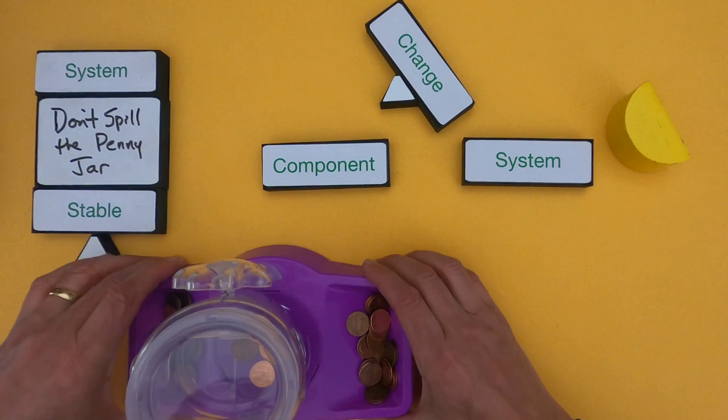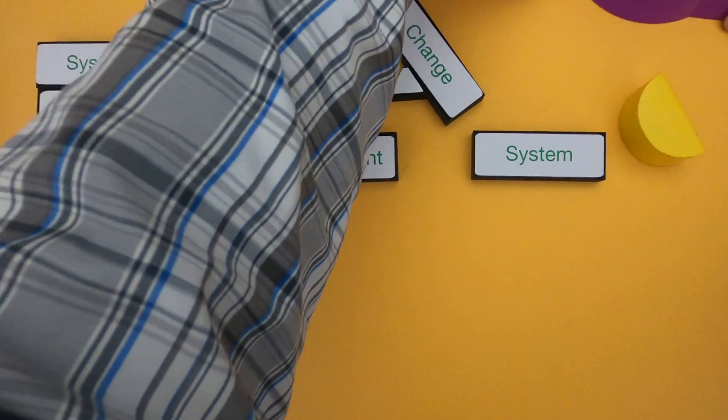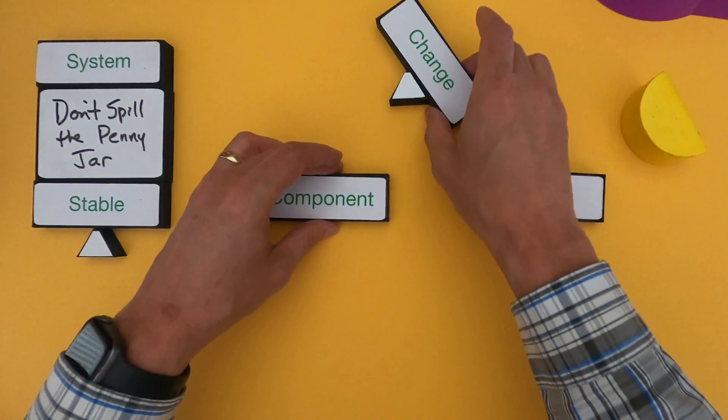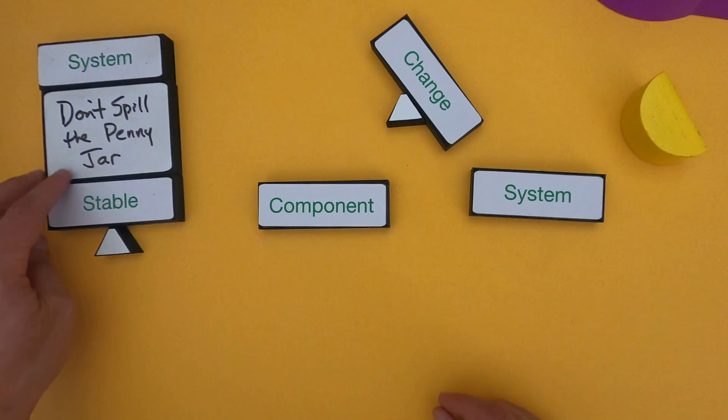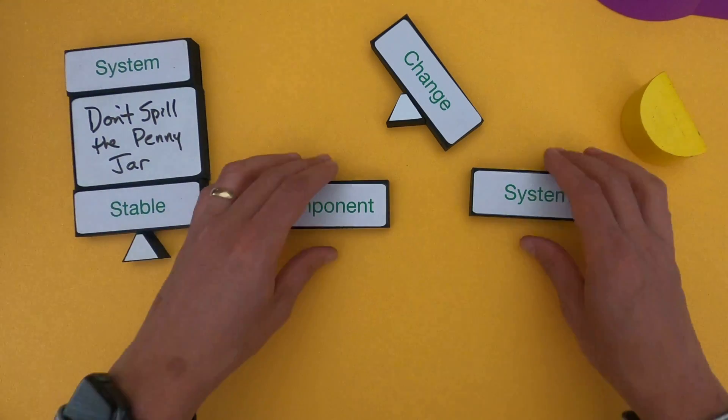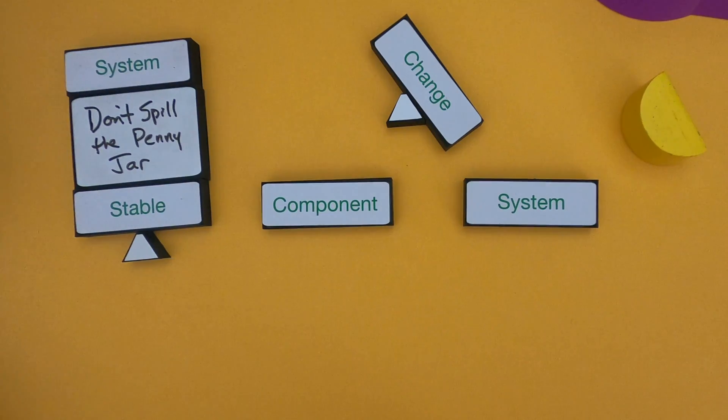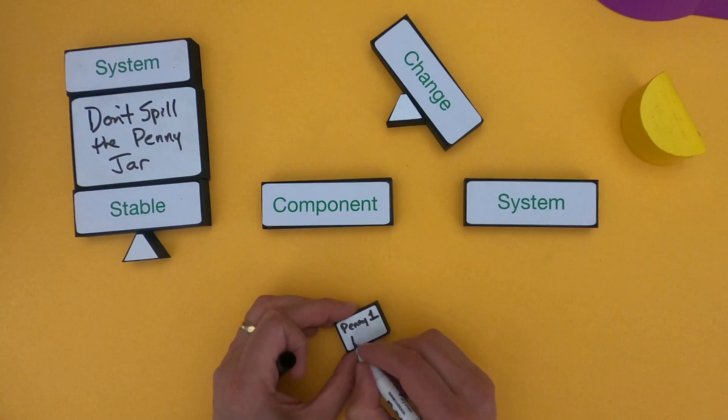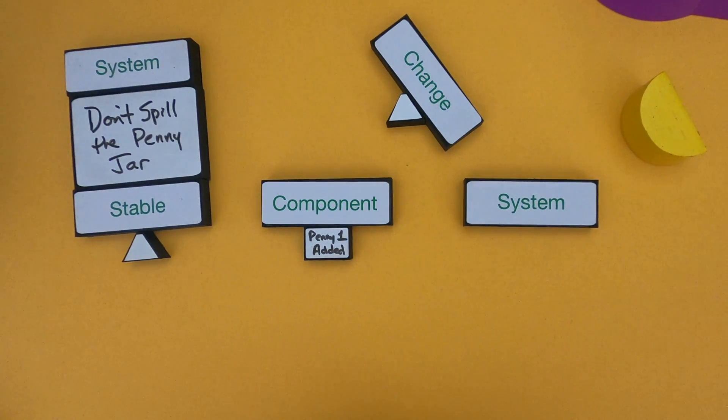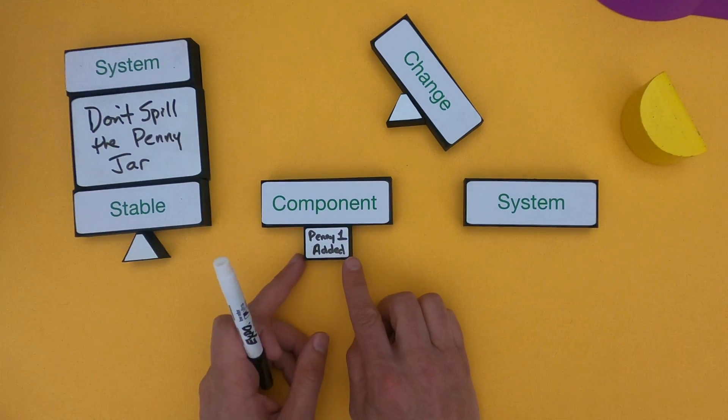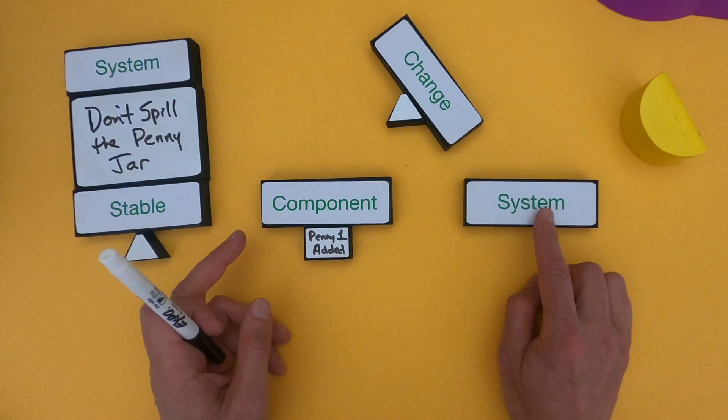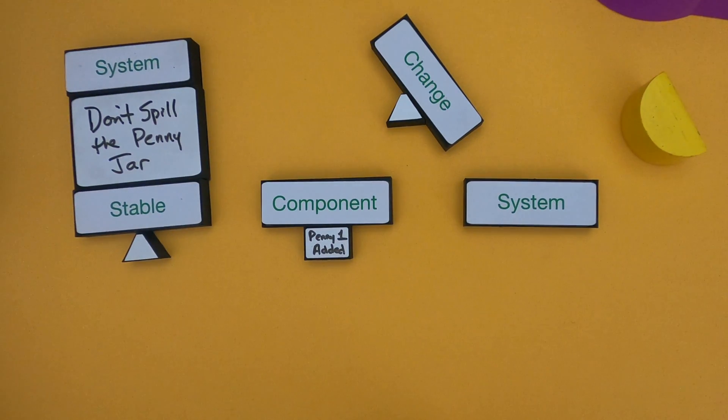Let me get this out of the way and I'll show you what happened as we were playing that game. If our system is Don't Spill the Penny Jar, what we had was change in one component of that system. What was the change? The change in the component is that one penny was added. This component, remember, is a big part of a system.